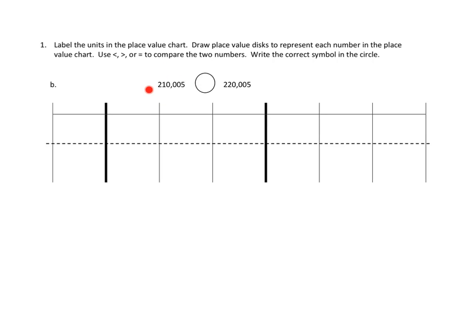So we've got these two numbers, and we're going to use the place value chart down here, which I notice is unlabeled. We're going to have to label that to figure out which is bigger. And then we're going to put that answer — greater than, less than, or equal to — in that box. So let's go ahead and label our place value chart first.